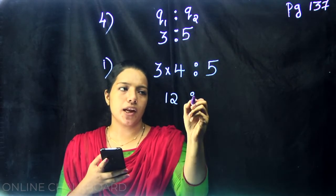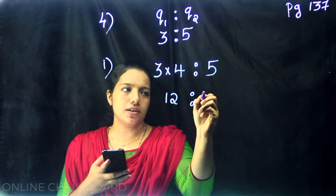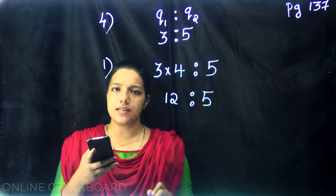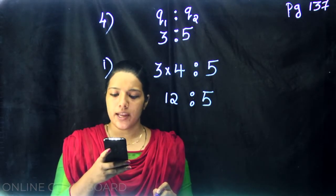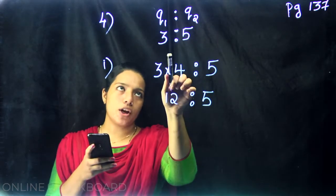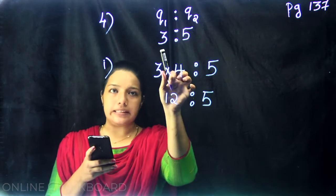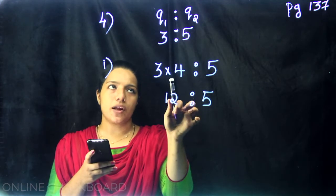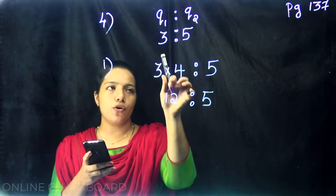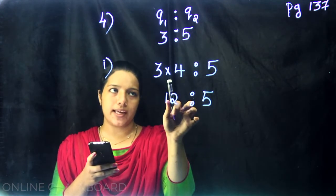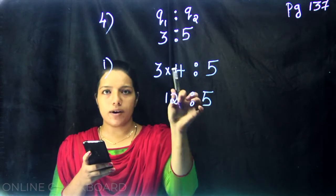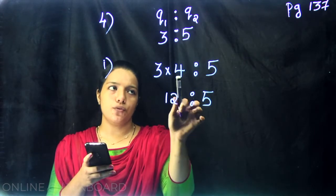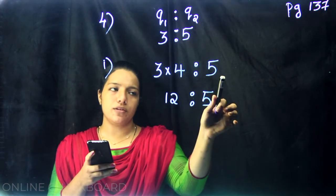Then the ratio is 12 is to 5. The first part means the smaller one, which is 3, and that is made 4 times the original. So the ratio of 3 into 4 is to 5 gives us 12 is to 5.